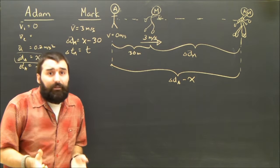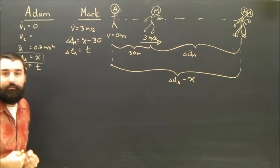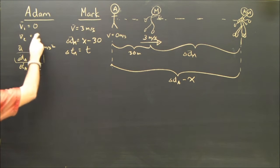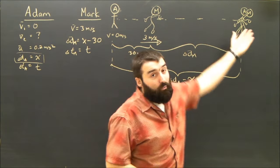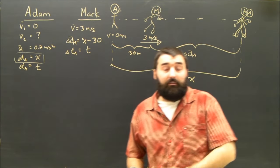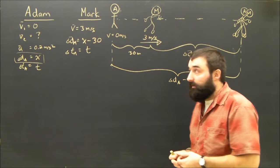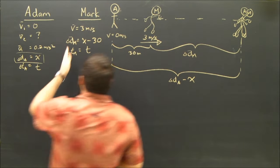I will use it, though, for V2 for Adam, because I don't care what Adam's velocity is when he passes Mark. Although, if this was a test, I would probably make that part B of the question. So, looking at Mark again,